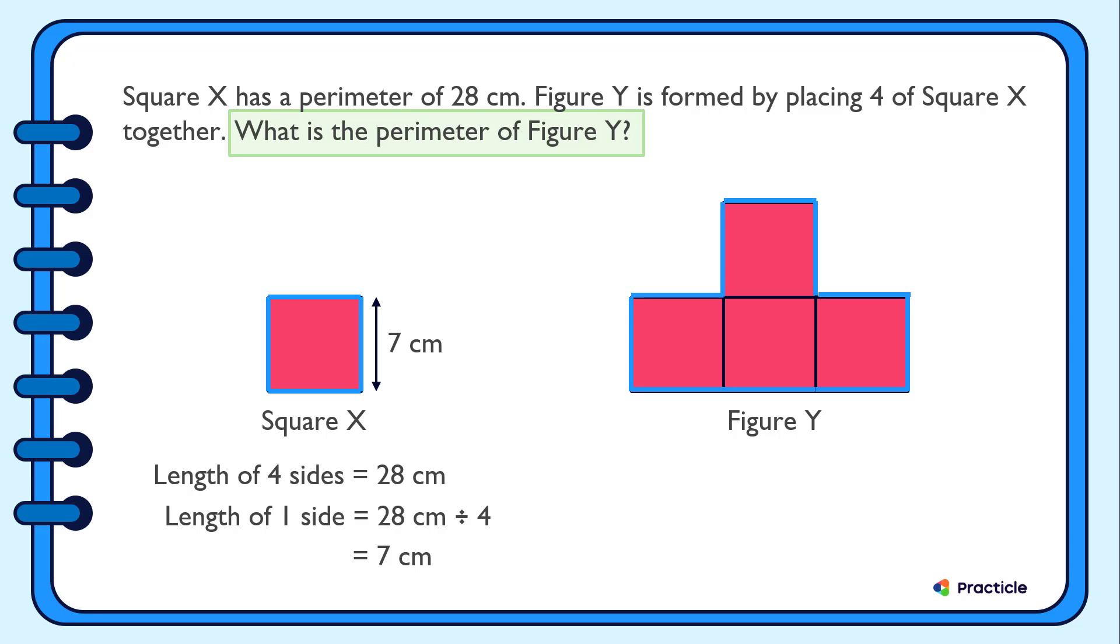So let's multiply 7 cm by 10 to find the parameter of Figure Y. 7 times 10 equals 70. And we have found the answer to this question. The parameter of Figure Y is 70 cm.